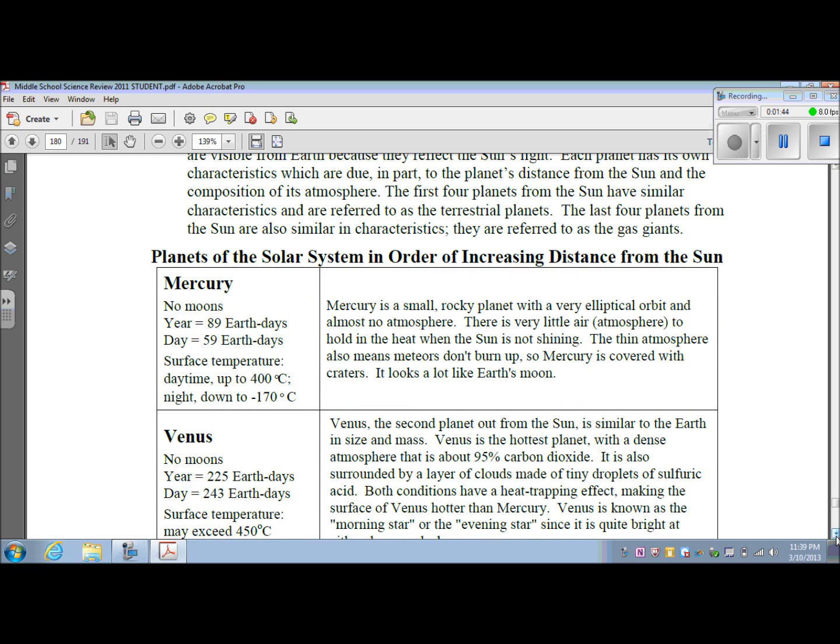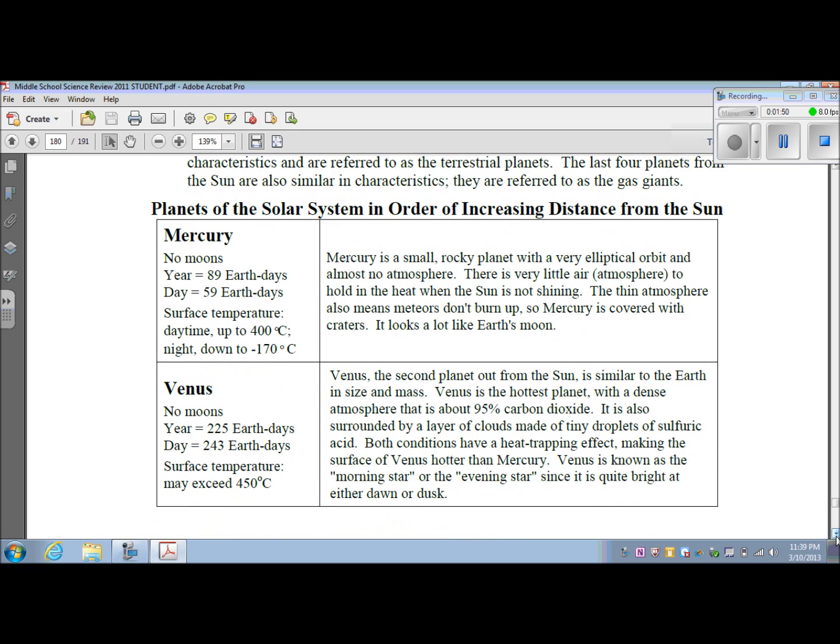Planets of the solar system in order of increasing distance from the Sun. The closest planet to the Sun is Mercury. It has no moons. The year is 89 Earth days. The day is 59 Earth days. Surface temperature daytime up to 400 degrees Celsius, nighttime down to negative 170 degrees Celsius. Mercury is a small rocky planet with a very elliptical orbit and almost no atmosphere. There is very little air or atmosphere to hold in the heat when the Sun is not shining. The thin atmosphere also means meteors do not burn up, so Mercury is covered with craters. It looks a lot like Earth's moon.